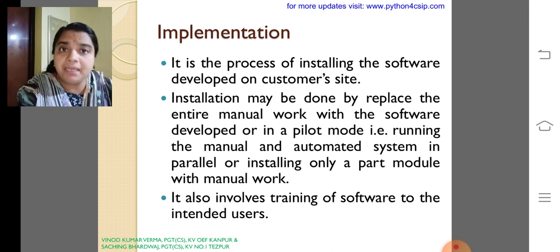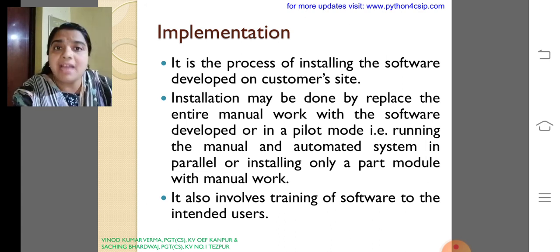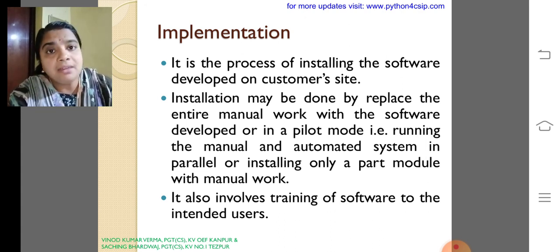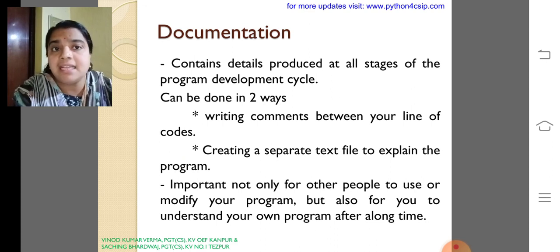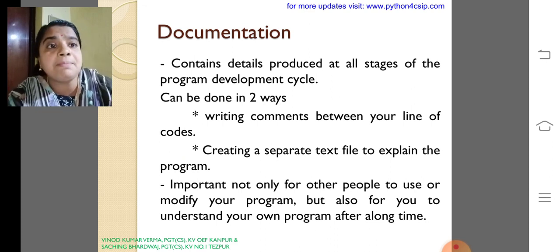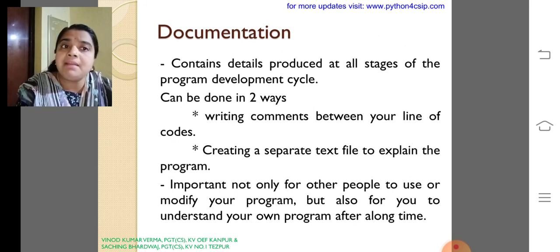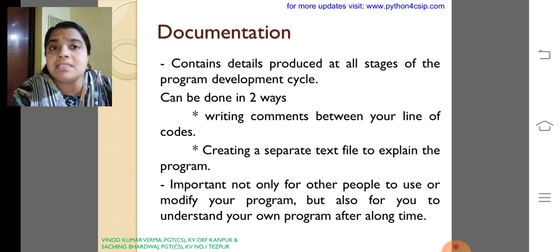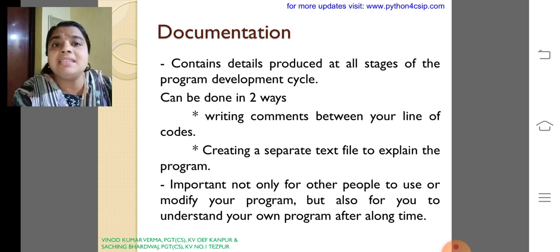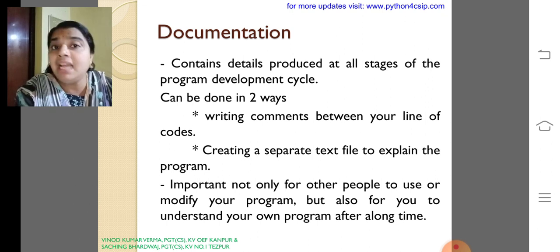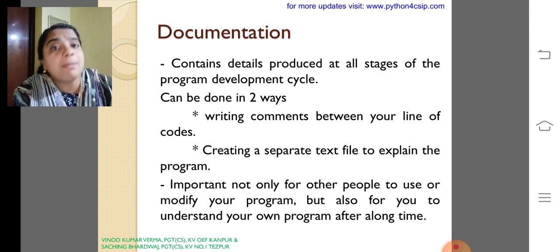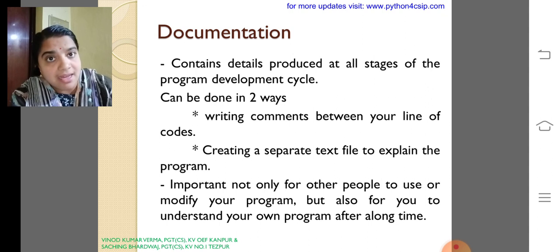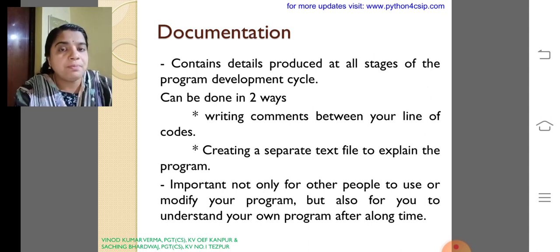The last but not the least, that is the documentation. Contains the details produced at all the stages of the program development cycle. Can be done in two ways: writing comments in between your line of code, or creating a separate text file to explain the program. Normally at the installation time you will get a text file, how to install, how to use. For if you are playing a game you will get the instructions like how to play a game, which are all the tools you can use. So it is like the instruction for the users how to use the software.